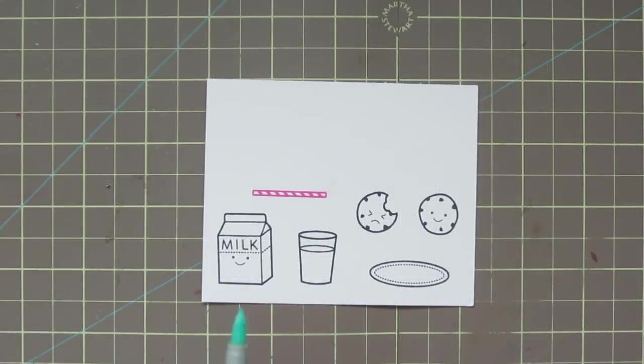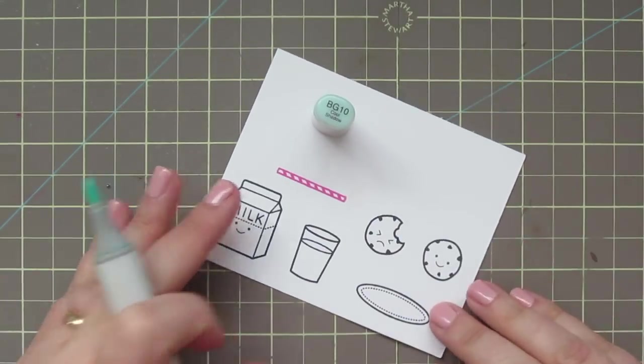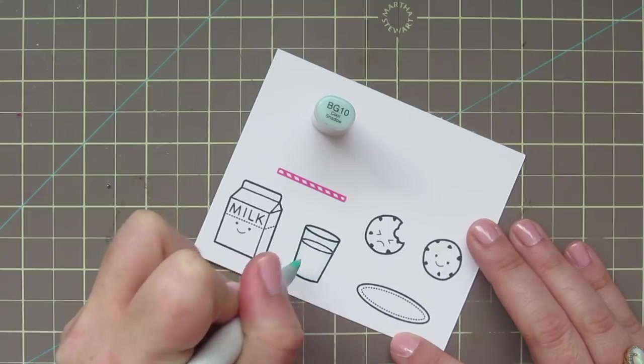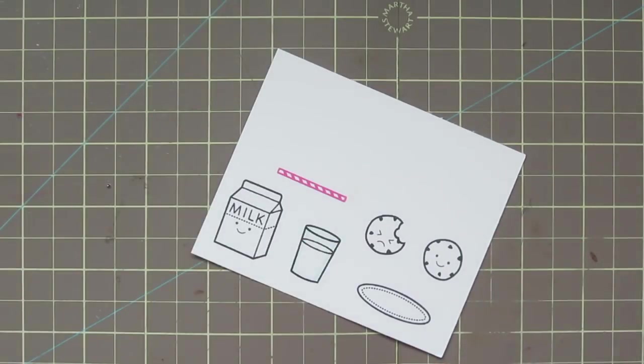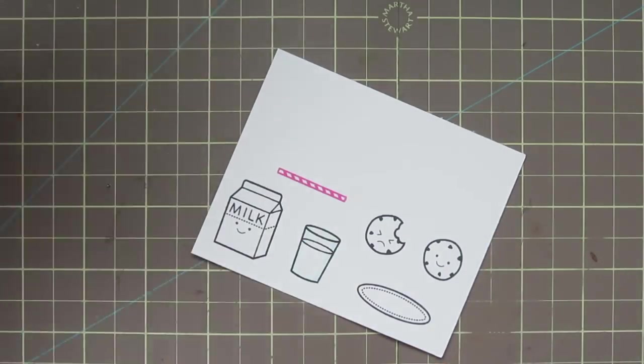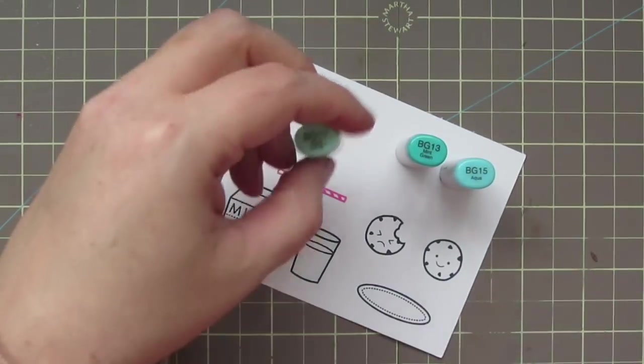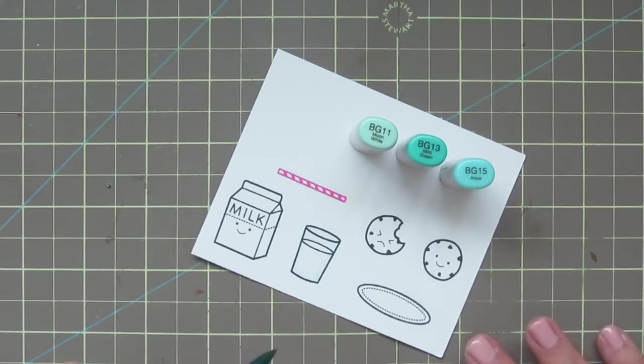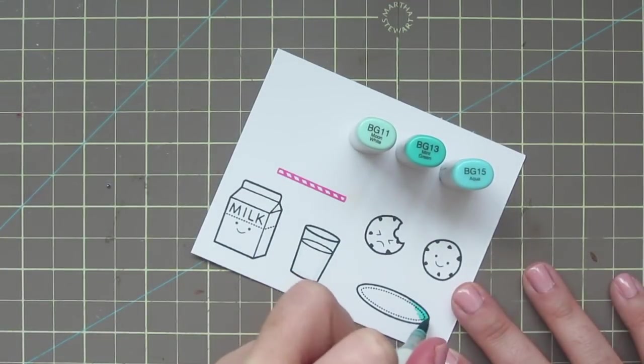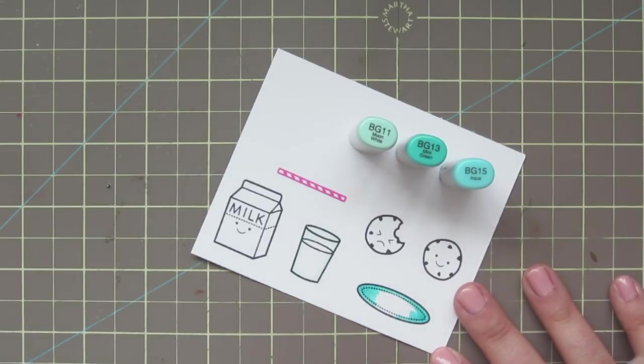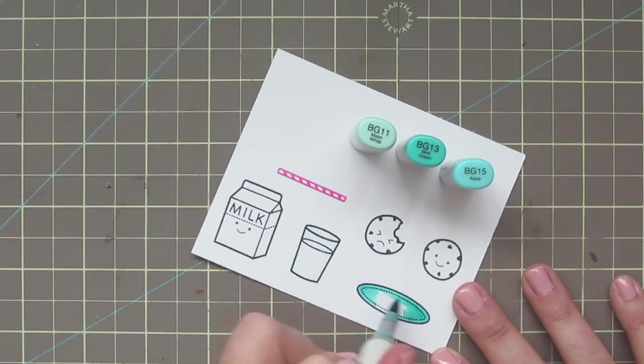I've stamped out my images with Memento Tuxedo Black ink on some Copic-friendly cardstock, and I'll be coloring with my Copic markers today. Normally I would walk you through the entire coloring process, as I do in almost all of my videos, and you can check out my entire Copic playlist on my channel if you're interested in learning more about coloring with Copic markers. I've actually got several playlists on different coloring mediums and different styles of cards.